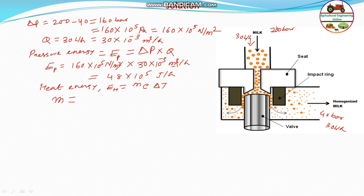Mass flow rate equals discharge multiplied by density. Discharge is 30 into 10 to the power minus 3 cubic meters per hour, and density is 1030 kg per cubic meter. Cubic meters cancel out, giving 30 into 1.03 kg per hour as the mass flow rate of the milk.